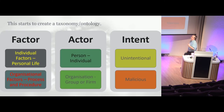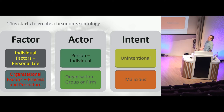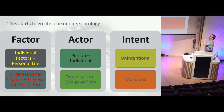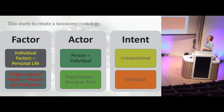Often people think it is only the person, but the processes within a company are just as important, and the framework starts to recognize that. The ontology begins with three main areas: factor, actor, and their intent — whether malicious or otherwise. You've got their personal factors and personal life, the nature versus nurture aspect. You've got the organizational factors and procedures within the company that control their behavior. And then you've got intent, which may actually be unintentional and allow internal threat through an accident.